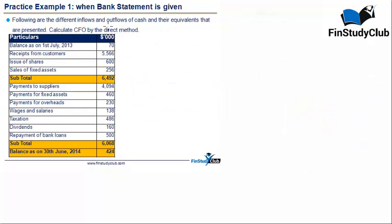This is an example where different cash flows are given — a bank statement — and all we have to do is calculate CFO by the direct method. There are inflows and outflows given, and the accrual issue has already been solved. I'm going to call out the names of each one, categorize them, and then total them. In terms of inflows: receipts from customers — purely operational; issue of shares — purely financial; sale of fixed assets — purely investment.